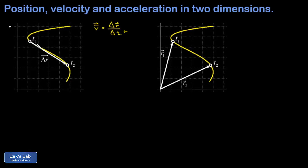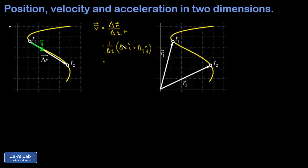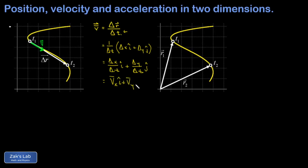The length of the velocity vector depends on how fast the object got from point A to point B. When we expand the displacement vector into its components and distribute the one over delta t to both terms individually, we discover that the coefficient of i-hat in the average velocity vector is just the average x velocity — delta x divided by delta t. So we can write this as vx-bar i-hat plus vy-bar j-hat.